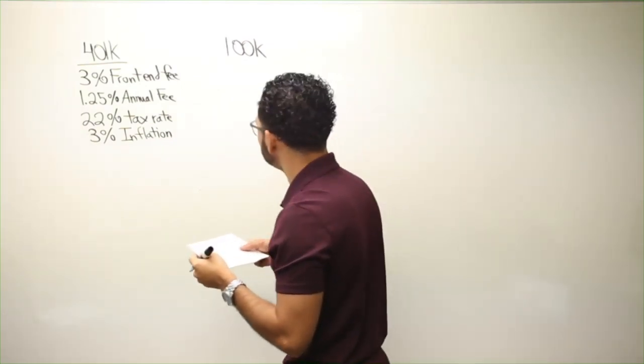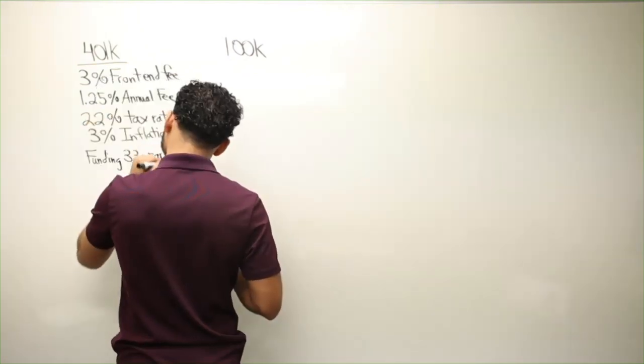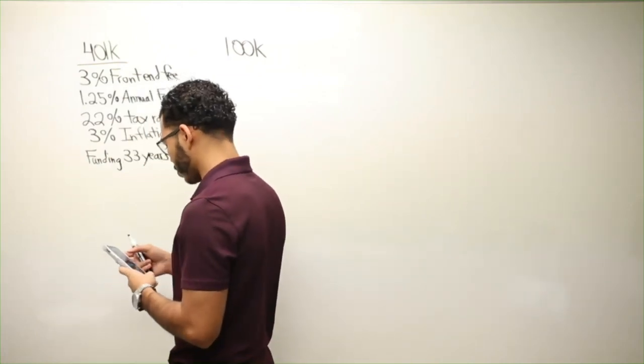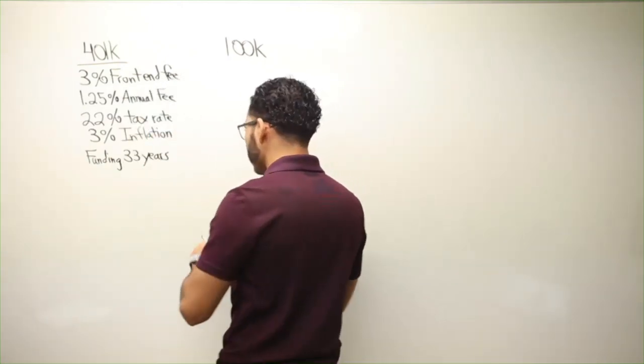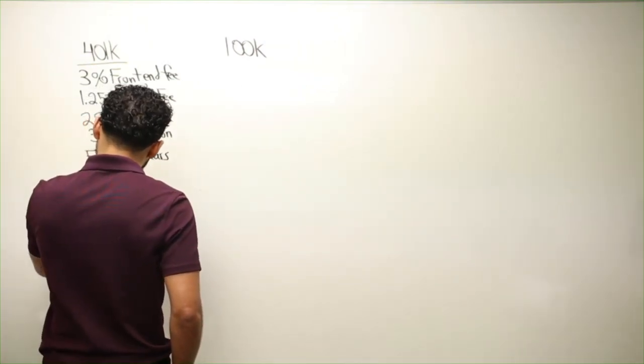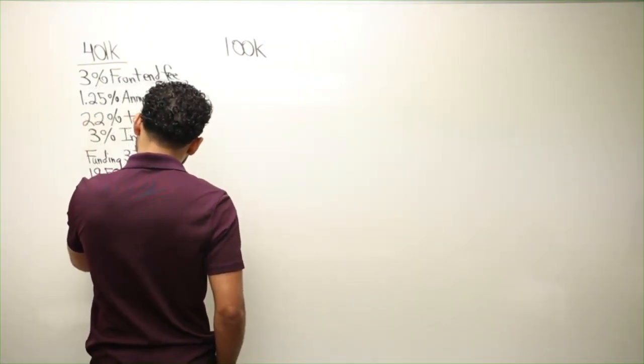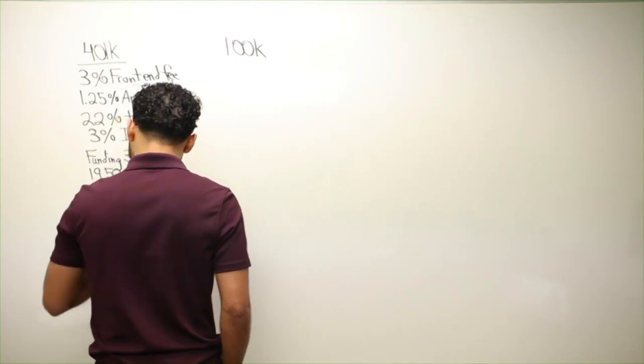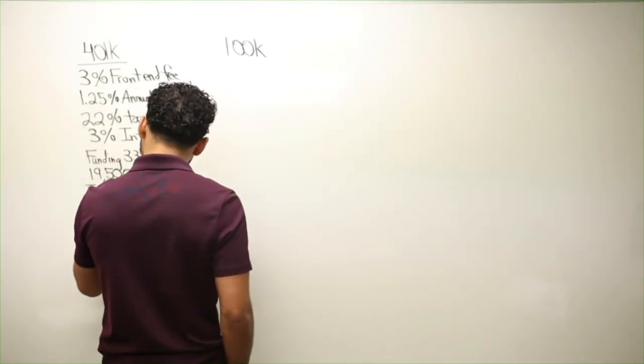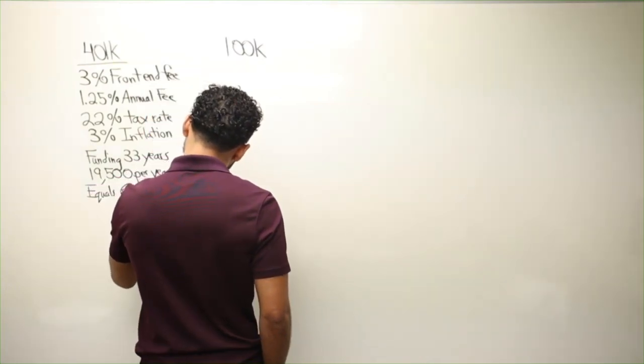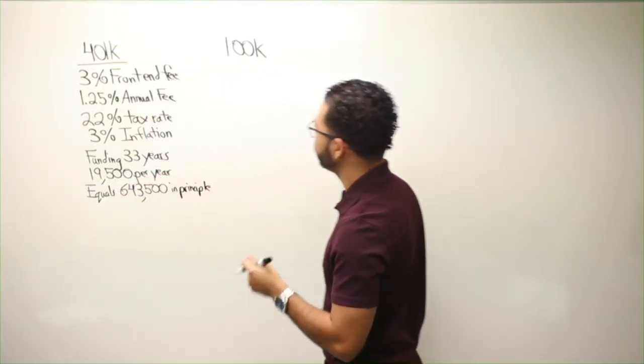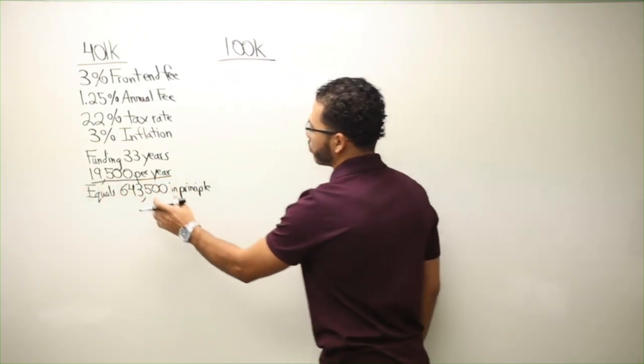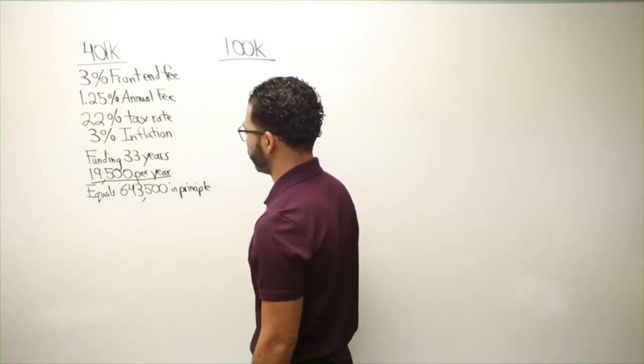So if they were to fund this thing for 33 years, and let me just make sure I have this correct. So funding 33 years, $19,500 per year would equal $643,500 in principle is what would have went into your 401k plan. Someone making $100,000 a year, and you're max funding your 401k, $643,500 in principle.